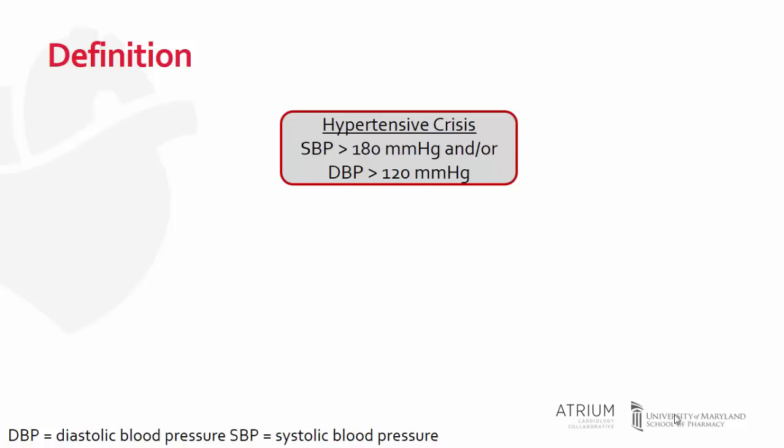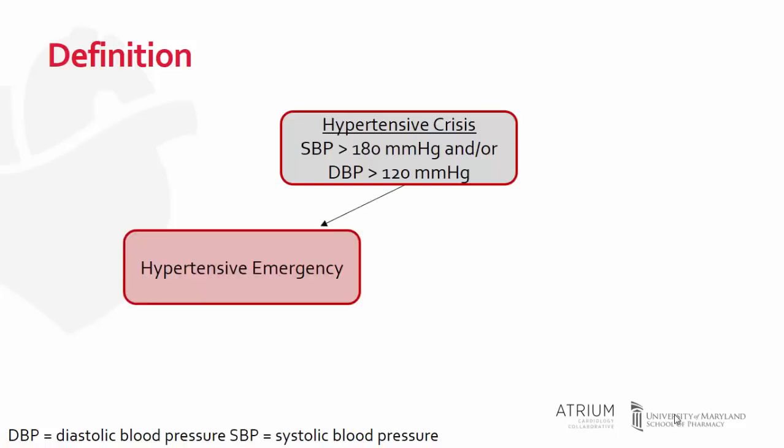Further categorizing this enables us as providers to determine what level of care a patient requires as well as the type of treatment a patient requires. Those patients with a hypertensive emergency have new, progressive, or worsening end organ damage such as acute coronary syndrome or acute kidney injury. These patients require admission to an intensive care unit and parenteral therapy to lower their blood pressure.